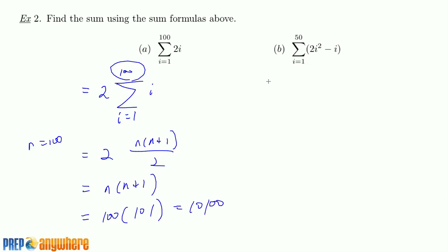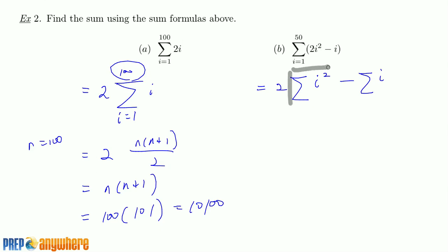For the next one, first use the properties instead of the formulas. Using the properties, you get 2 times sigma i-squared minus sigma i. You have to make it look like it's completely isolated.